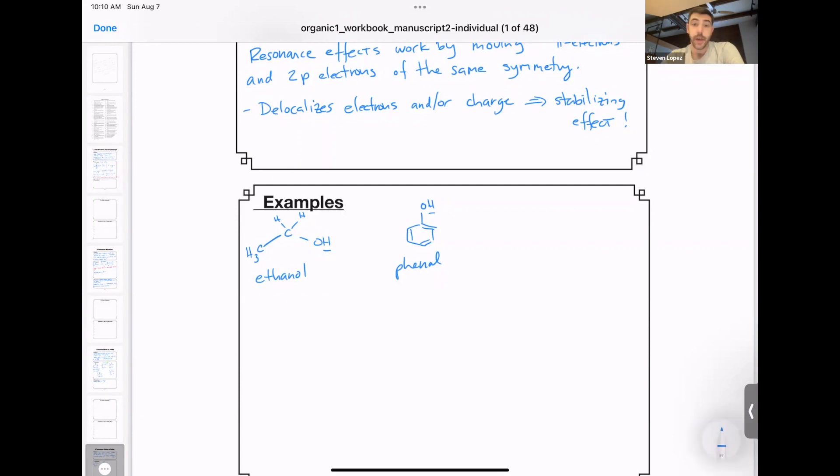So the pKa of ethanol is about 16, pKa of phenol is about 10. So how do you make the determination on which is the stronger acid? So remember what I always say, compare the stability of the conjugate bases. And just as a reminder, a conjugate base is the structure that results from a deprotonation event.